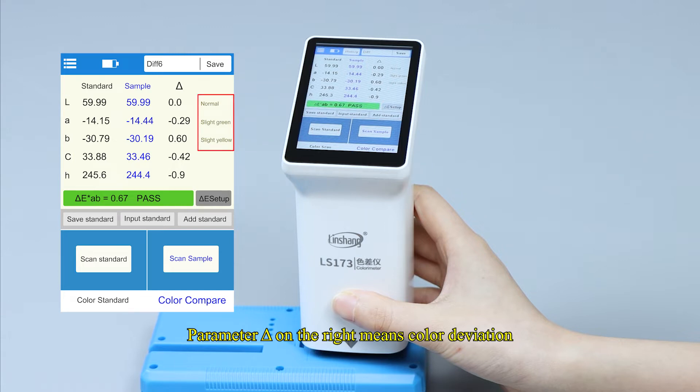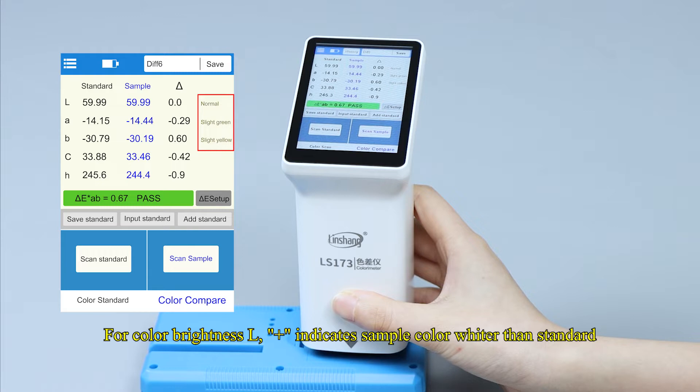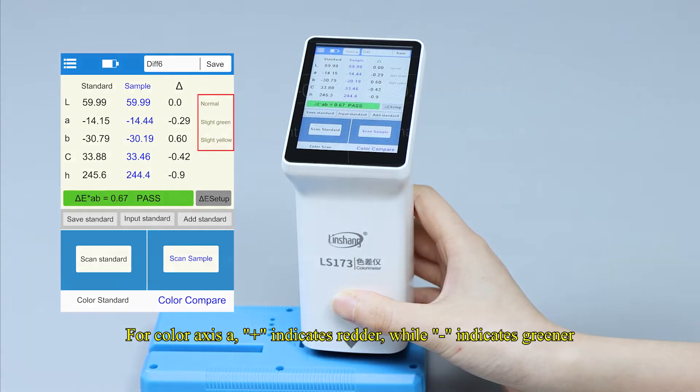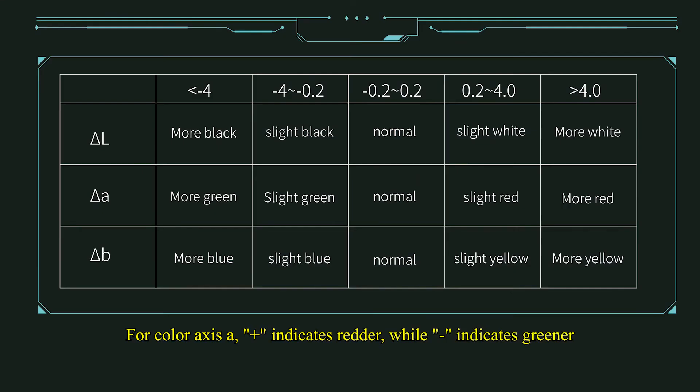Parameter delta on the right means color deviation. For color brightness L, a positive value indicates sample color whiter than standard, while a negative value indicates sample blacker than standard. For color axis A, a positive value indicates redder, while negative indicates greener. For color axis B, a positive value indicates yellower, while negative means bluer. The color indication is for reference only and cannot be used for color correction.